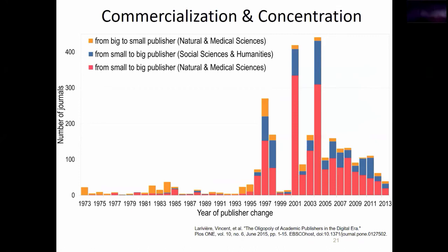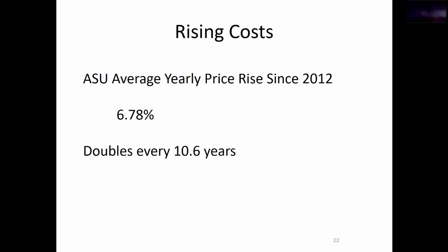Not coincidentally, we've also seen significant costs in scholarly communication. Our average year-on-year price increase at Appalachian State is a little under 7%. On average, whether science journals, individual journal packages, or individual journals, they generally go up about 7% a year — which means our costs of those subscriptions would double every 10.6 years. We generally don't see a doubling of our collections budget in 10.6 years. What's also interesting is that for the past 10 years we've averaged under 2% general inflation in the United States.